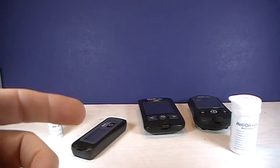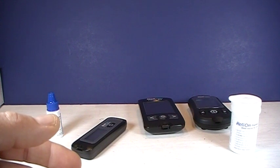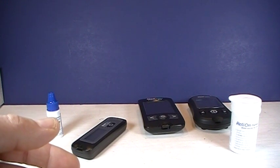Now control solution is recommended to practice to get a feel for how to use the meter. It's recommended when you use a new vial of test strips or if you think your readings are inaccurate. You can also use it if the meter has been damaged or dropped.